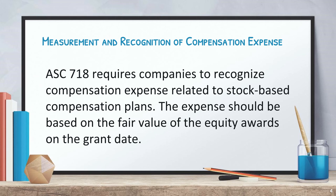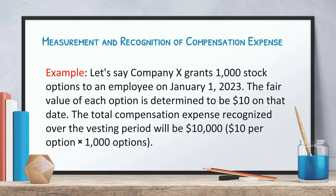ASC 718 requires companies to recognize compensation expense related to stock-based compensation plans. The expense should be based on the fair value of the equity awards on the grant date. For example, if Company X grants 1,000 stock options to an employee on January 1, 2023, and the fair value of each option is determined to be $10 on that date, the total compensation expense recognized over the vesting period will be $10,000.